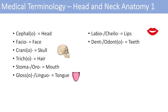The next one is dent or odonto, which denotes the teeth. That's easy to remember — dentist, dentistry, odontogenic, all denoting something involving the teeth. The next one is gingivo, which means gums. You know gingivitis, or an inflammation of the gums.